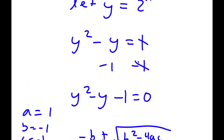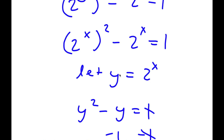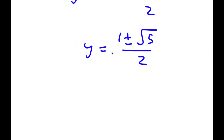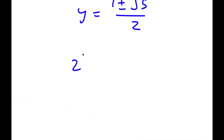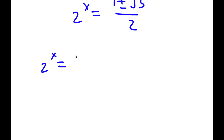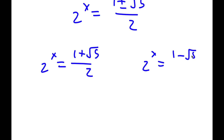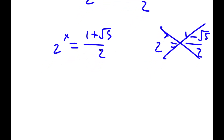Remember, we set y equal to 2 to the power of x. So if y equals 1 plus or minus the square root of 5 over 2, then 2 to the power of x equals 1 plus or minus the square root of 5 over 2. For the case 2 to the power of x equals 1 minus the square root of 5 over 2: 1 minus the square root of 5 is a negative number, and a positive number raised to an exponent can't equal a negative number, so this case is invalid.